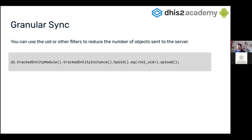We can also restrict what we upload — this is called granular sync. We can use filters, the same way we use filters to get information from the repositories, to restrict the amount of data being uploaded. For example, specifying a tracked entity instance by UID and calling the upload method will upload only that record. We can also use any other filters, such as by name or any other property.